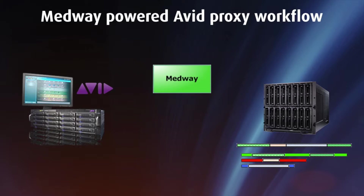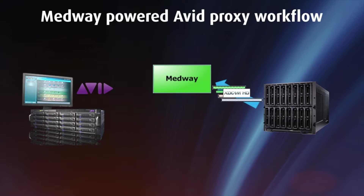Medway will then transfer just the required segments of these source clips back into the Avid system. In this example, Medway will take the XDCAM HD material and write it into Avid, re-wrapping to OP Atoms during the process, but leaving the essence as XDCAM HD. The option is always available to have Medway transcode this material into another codec during this transfer, to DNxHD for example.